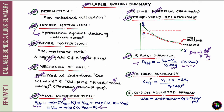Next let's take a look at the interest rate risk convexity of a callable bond. Again, we switch to effective convexity because there is no closed-form formula to price a callable bond. Effective convexity is computed as: (V+ + V− − 2 × V_base) divided by (V_base × delta_y²).